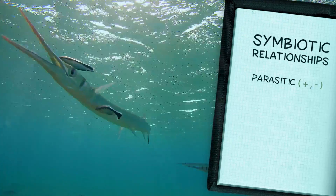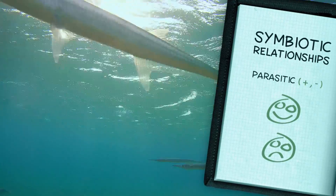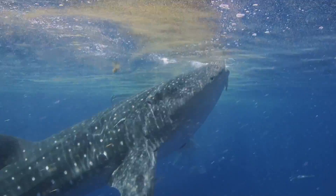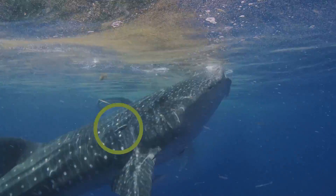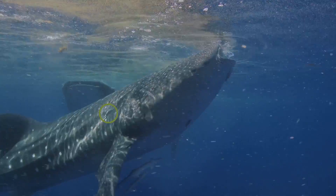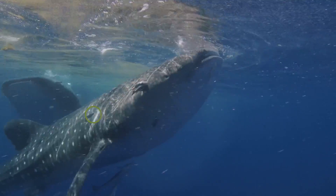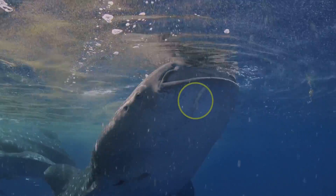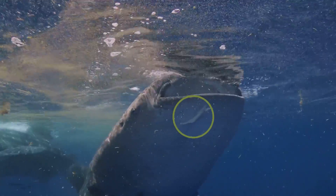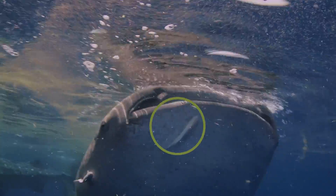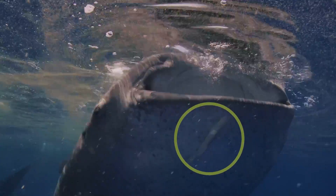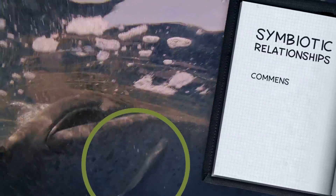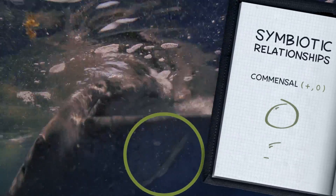This parasitic relationship means one organism benefits while the other is harmed. Passing overhead, a slender fish clings to the side of a whale shark. Remoras like this one live directly on other fish, feeding on discarded food without negatively impacting their hosts. This relationship benefits one without affecting the other, which is why we call it commensal.